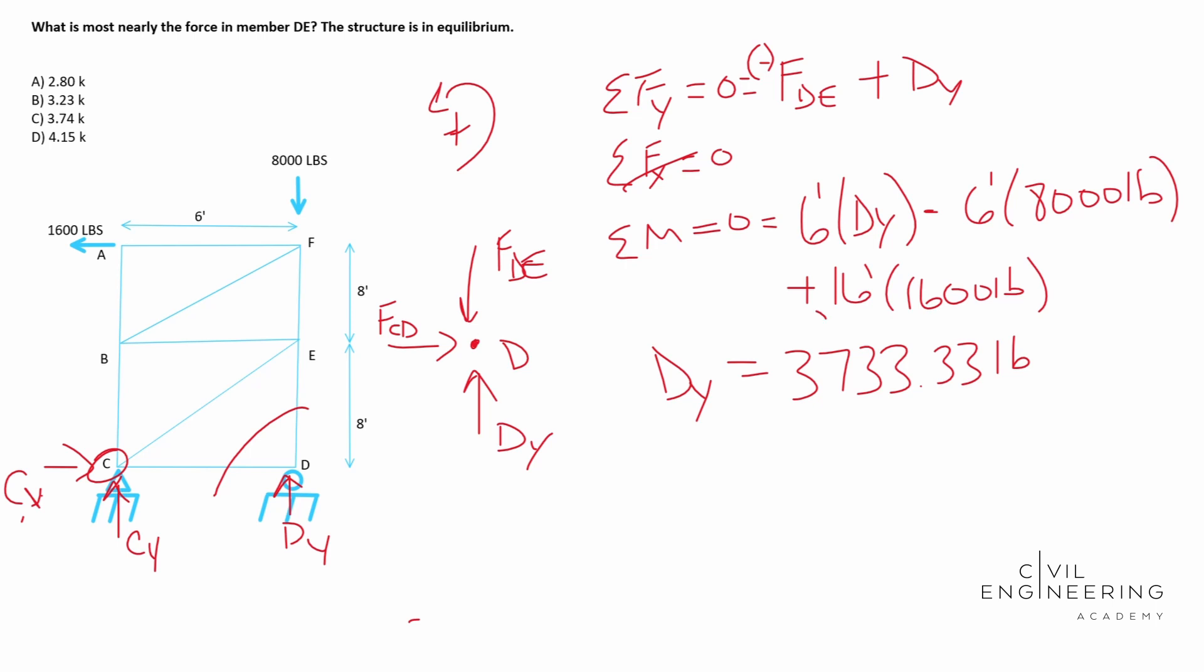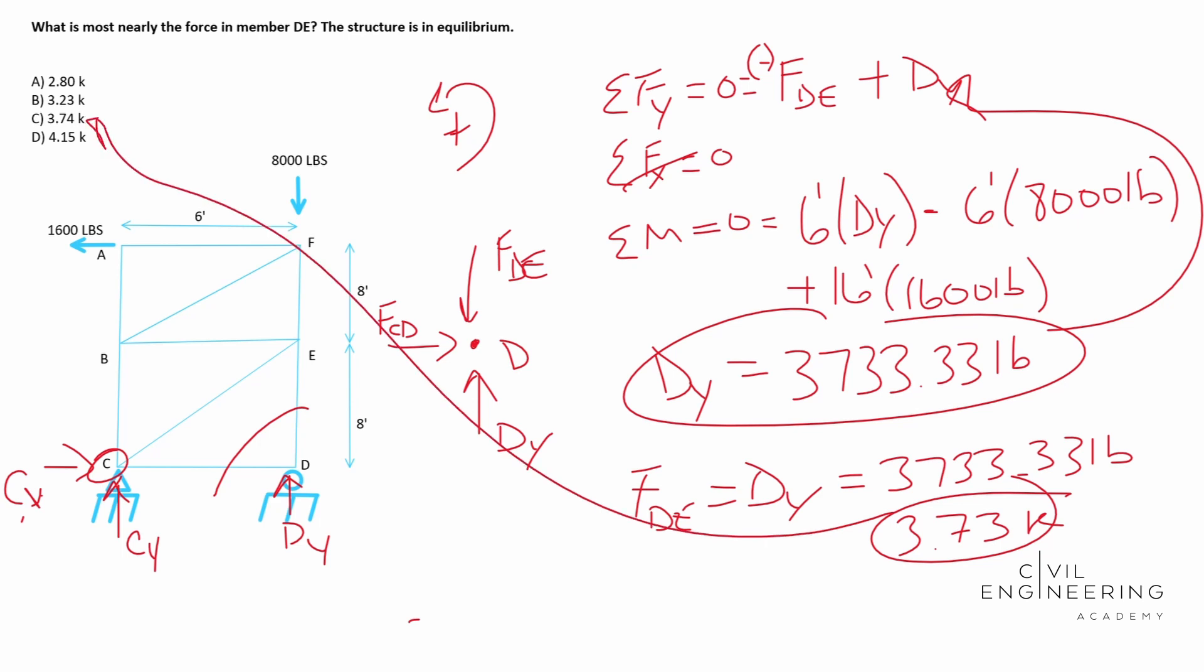So now we can use this and plug it in right up here. And so we end up with F_DE being equal to D_Y. And the whole crowd shouts F_DE is equal to 3,733.33 pounds. So our answer is in kips. If you don't remember, there's a thousand pounds in a kip. So in kips, we're looking at 3.73 kips. And that is going to be right there.